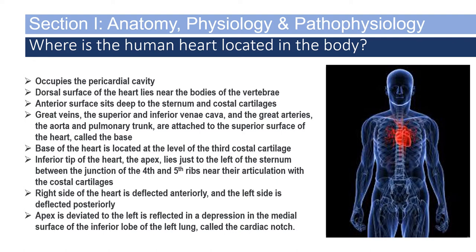The human heart occupies the pericardial cavity — peri meaning around the heart. The dorsal or posterior surface of the heart lies near the bodies of the vertebrae. The anterior or ventral surface sits deep to the sternum and costal cartilages. The great veins — the superior and inferior vena cava — and the great arteries — the aorta and pulmonary trunk — are attached to the superior surface of the heart, called the base.